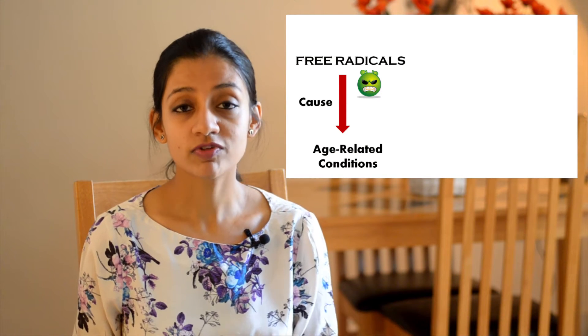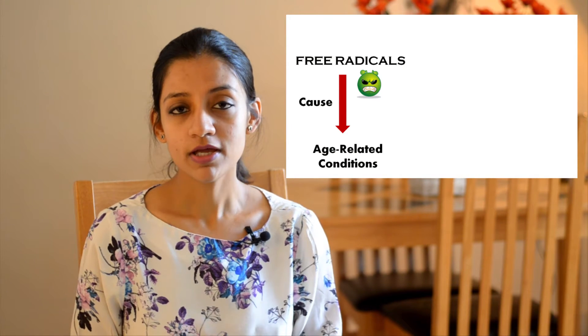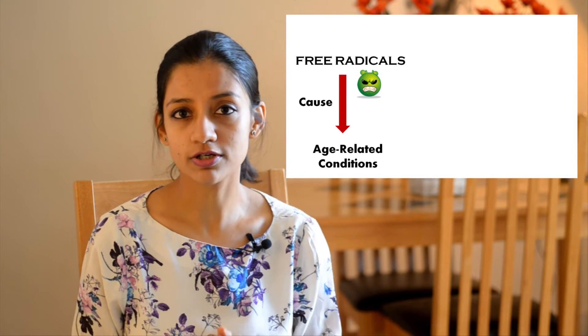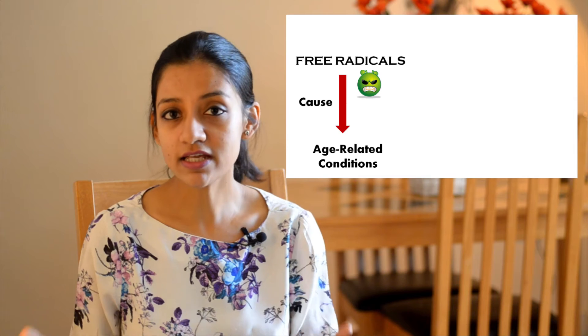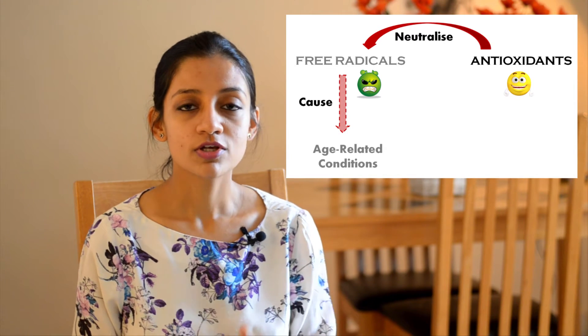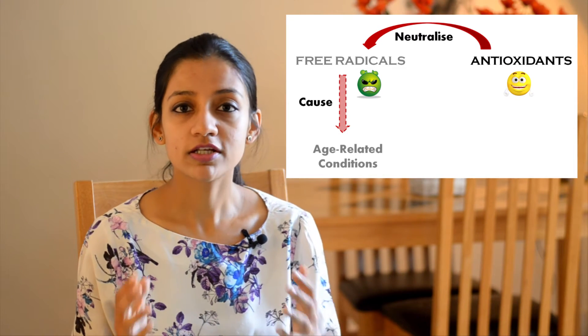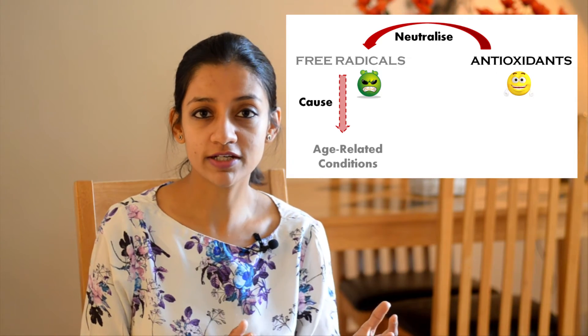So what causes these age-related conditions? Before I begin, I would like to briefly talk about two classes of compounds that are popularly used to explain the process of aging. The first class of compounds are known as free radicals — basically compounds with an unpaired electron on them, held responsible for causing aging. Now to counteract the effect of free radicals are the second class of compounds known as antioxidants, which neutralize the effect of free radicals in our body.